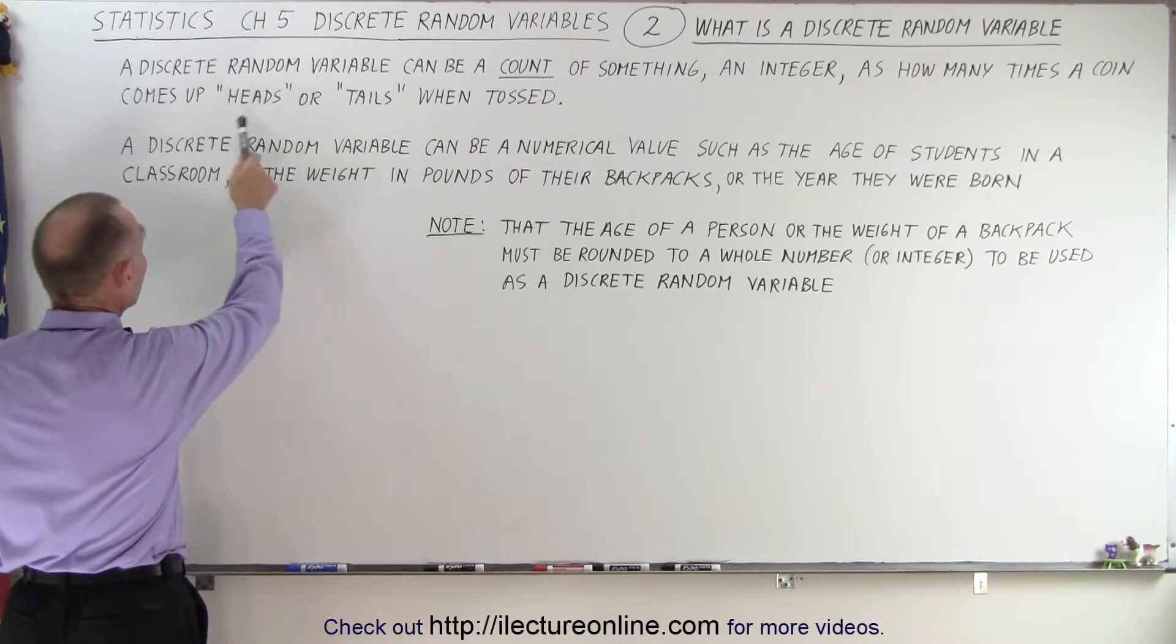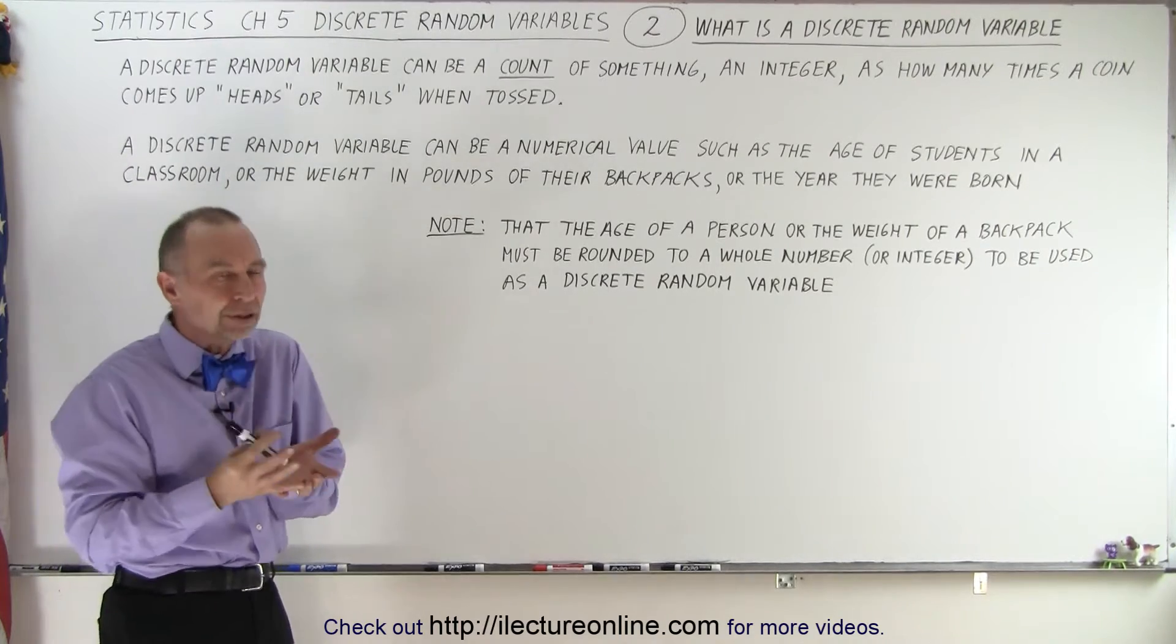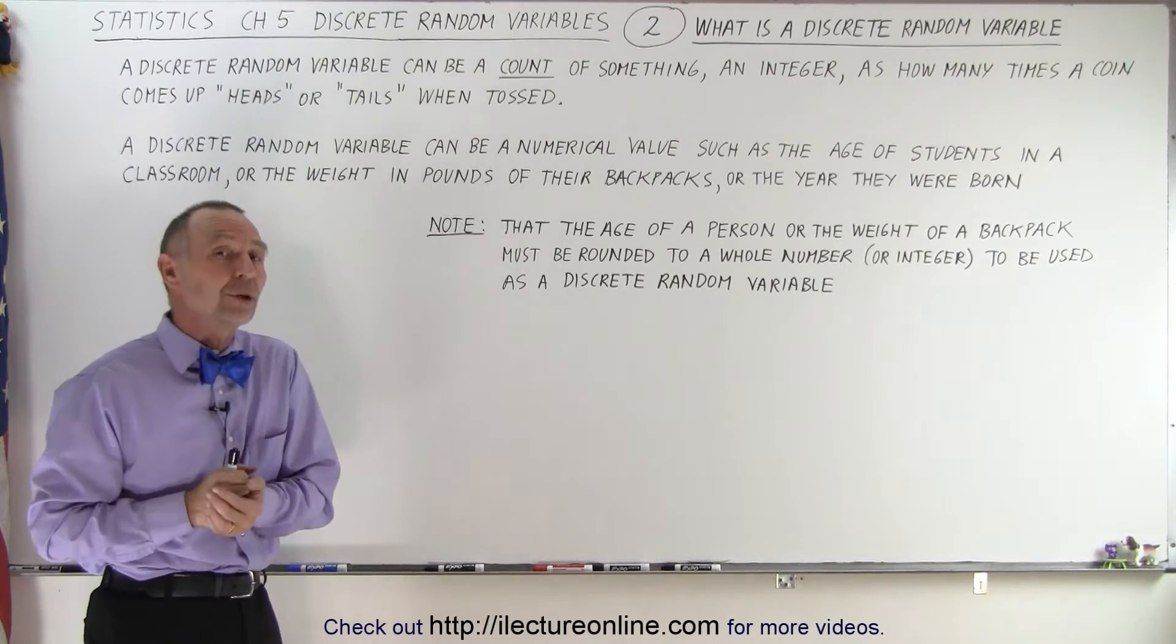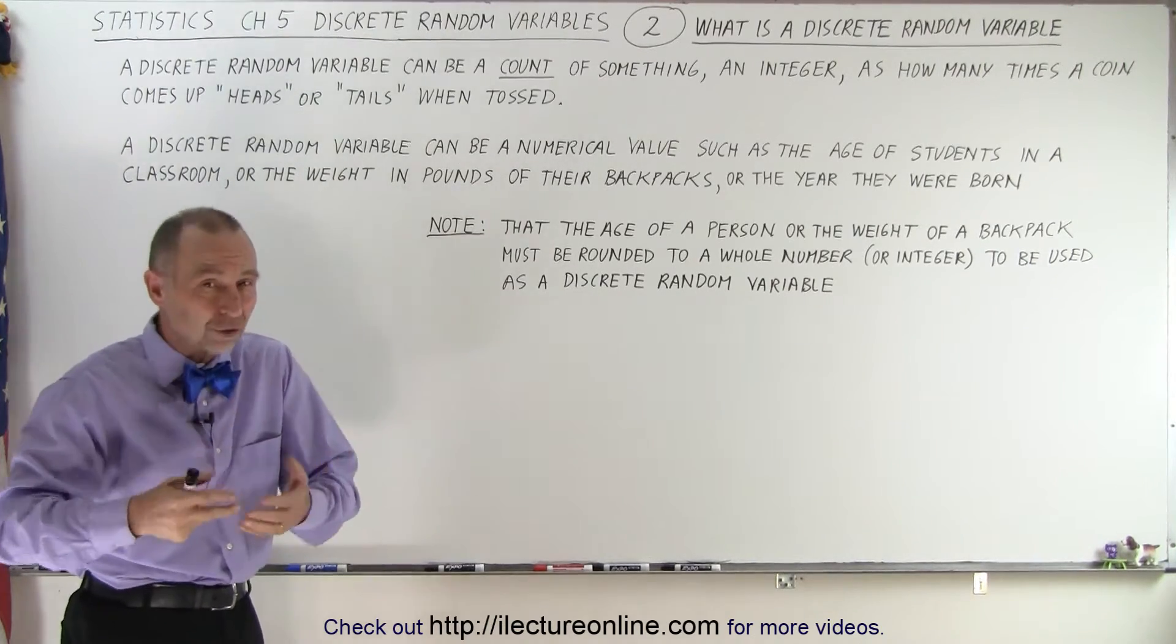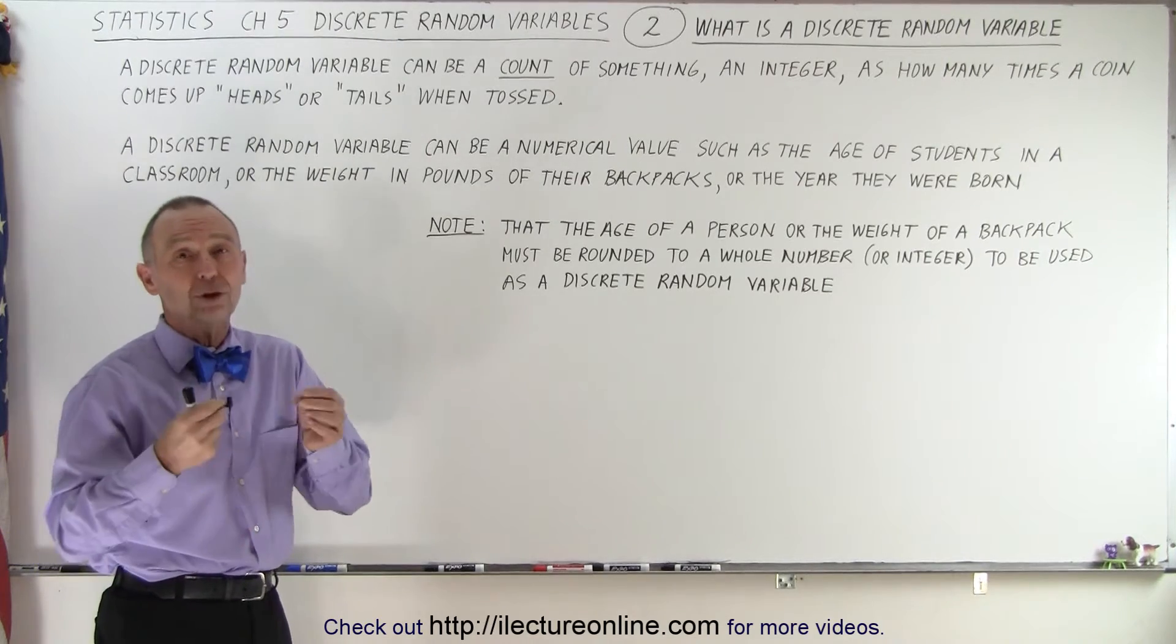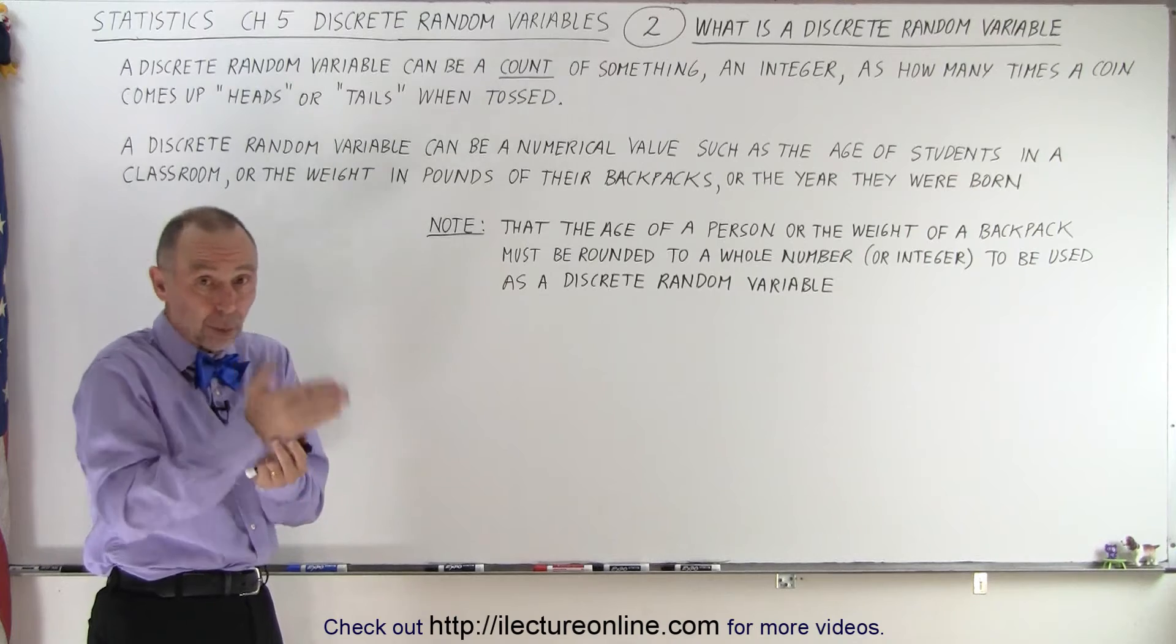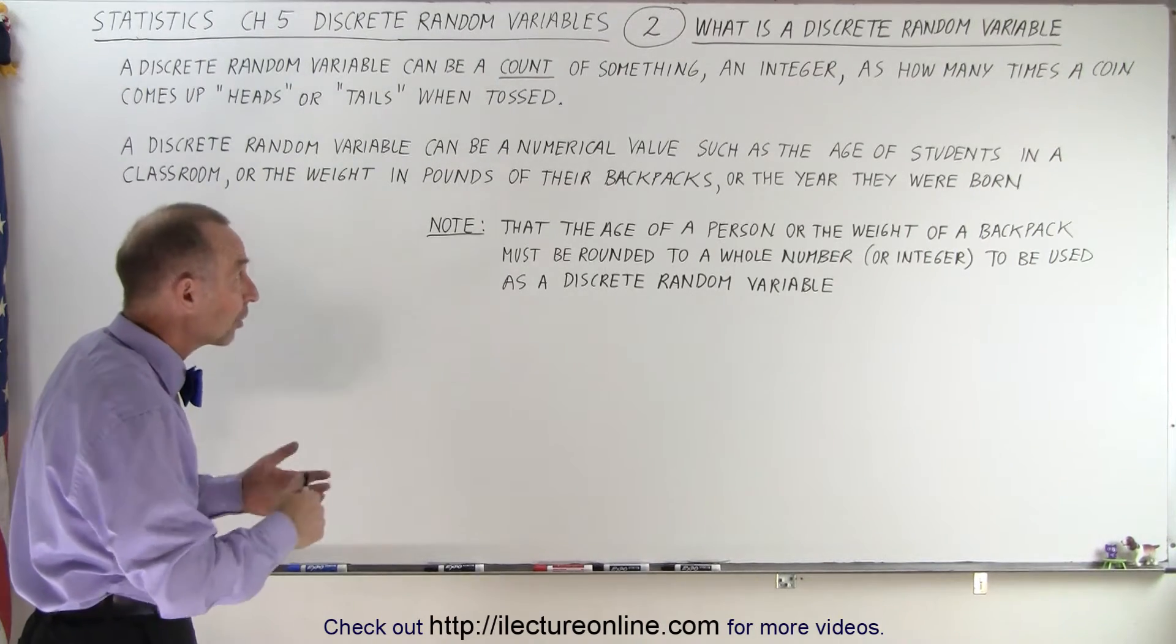is that a discrete random variable can be the count of something. That's the most typical definition of a discrete random variable - how often something occurs. How often you get heads or tails when you toss a coin could be a discrete random variable because the number will be 0 or 1 or 2 or 3 or 4, depending upon how many times you toss the coin.